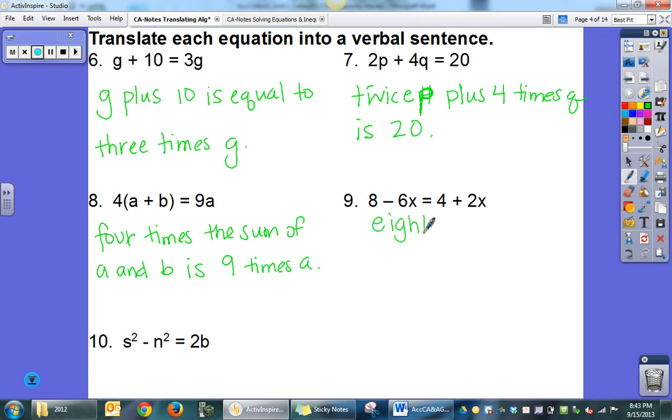Let's say 8 minus 6 times x is the same as, is equal to, the sum of 4 and twice x. Again, you could say the difference between 8 and 6 times x, 6 times x less than 8, so multiple ways to say this.